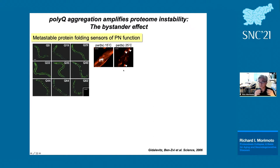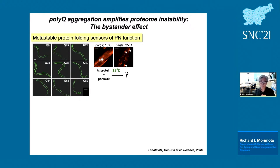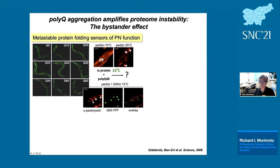At 15°C in the presence of polyglutamine, paramyosin completely misfolds — even though without polyglutamine the paramyosin is absolutely wild-type at that temperature. We have done these experiments in many different tissues. As we go from YFP alone (no effect), to Q24 (below threshold, stays soluble, no effect on paramyosin), to Q35 or Q40, we see increased proteotoxicity reflected by loss of paramyosin function.